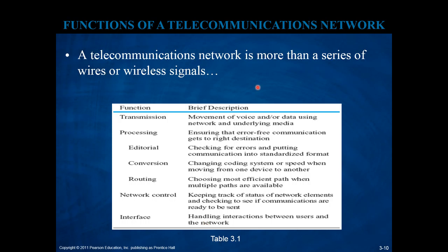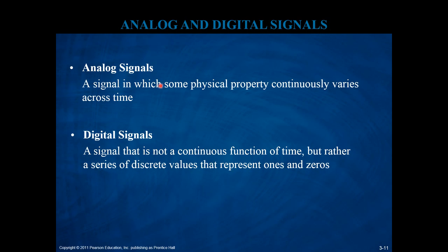Telecommunications networks are quite complex and involve a lot of high-level functions as well as specific technologies, tools, and subtasks within each function. At the most basic level, telecommunications networks are about sending some sort of signal across a geographical area or distance. At the most basic level, those signals can be divided into two groups: the so-called analog signal and the digital signal.